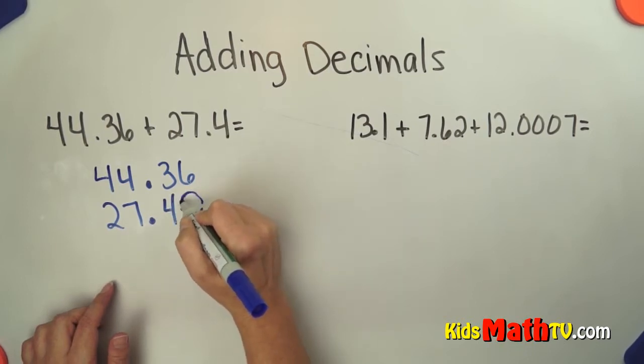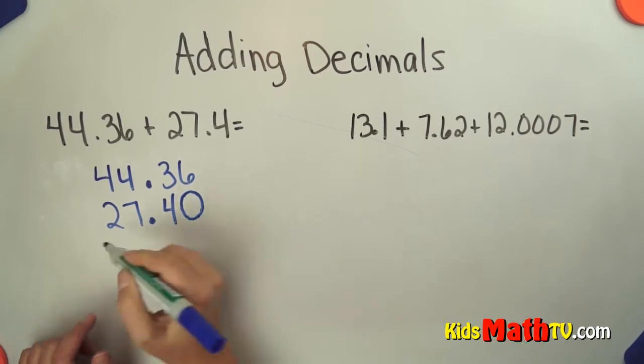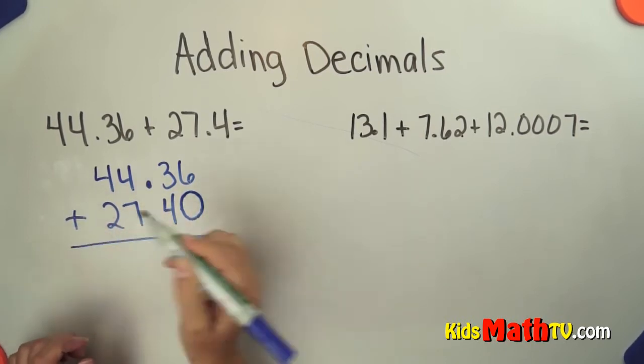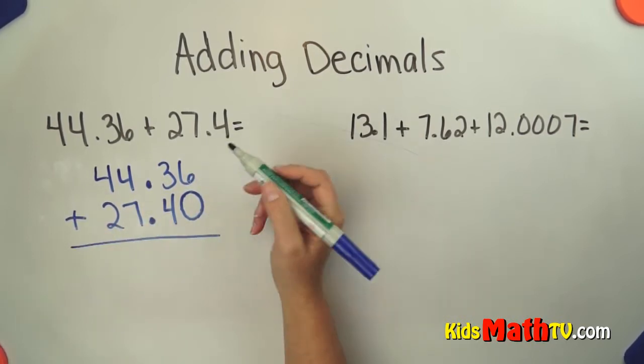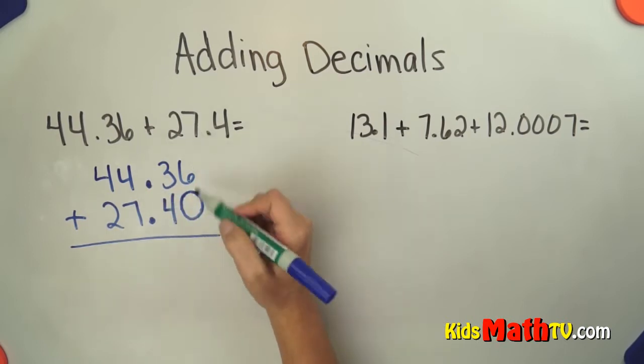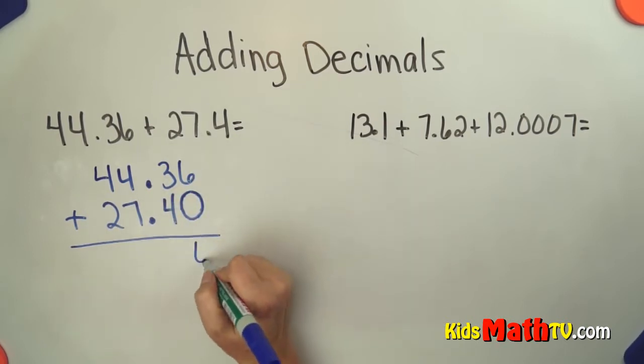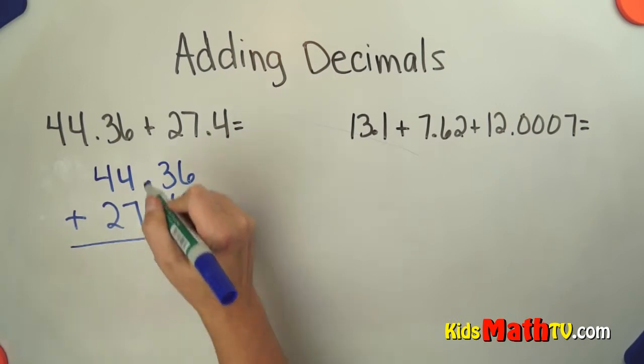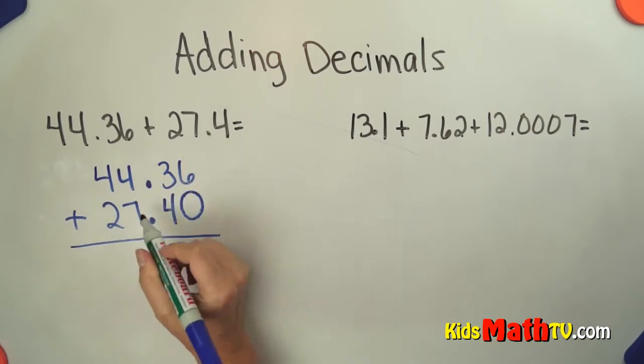We can put a placeholder zero here, and we are adding. So now we simply add. Our decimals are lined up, we simply add 6 plus 0 is 6, 3 plus 4 is 7. Our decimal point is still lined up, we bring it down,